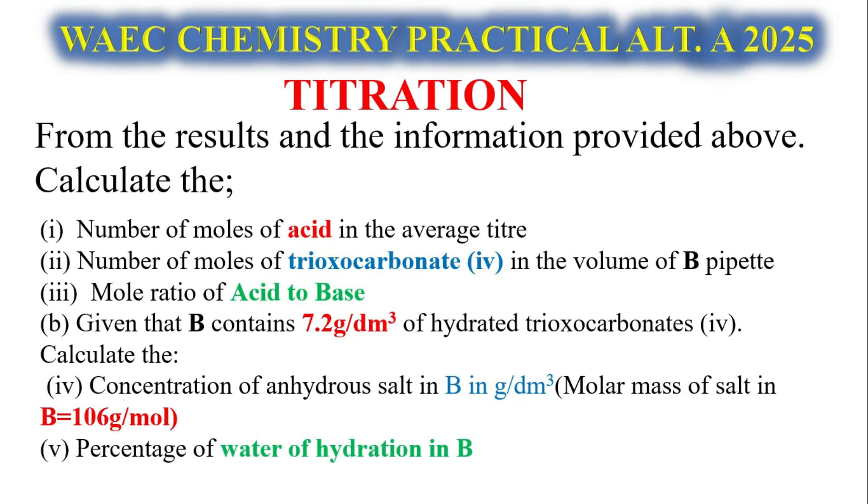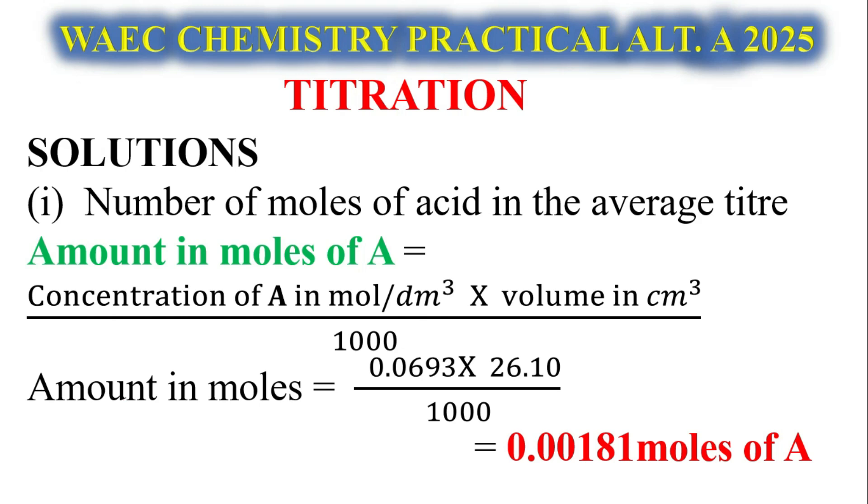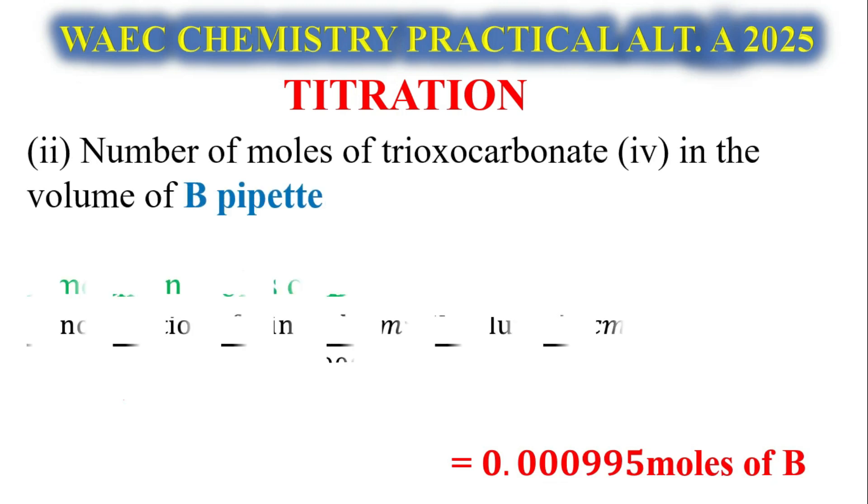Let's look at the expected questions. First: number of moles of acid in the average titre, number of moles of trioxocarbonate four in B, mole ratio of acid to base, given that B contains 7.2 g of hydrated trioxocarbonate four, calculate concentration of B in grams per dm³ and molar mass, and percentage of water of hydration in B. We have to calculate the number of moles of acid in the average titre. Using N = CV/1000, this is our quantity of acid per dm³, this is the titre value of the acid. Our final answer: number of moles of acid is 0.00181 moles of A.